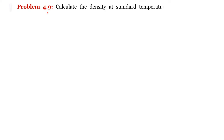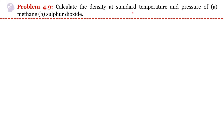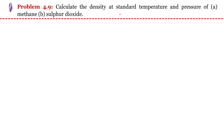Problem number 4.9: calculate the density at standard temperature and pressure for methane and sulfur dioxide. We know density equals mass per unit volume, so in order to estimate density, mass and volume should be known. We have been given standard temperature and pressure conditions. We know that any gas occupies 22.4 liters of volume at STP conditions.